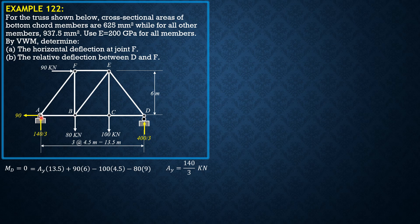At joint A, sum up forces. Assume all forces are in tension away from the joint. Summation of forces Y equals 0 gives negative 175 over 3. Summation of forces X gives force in AB equal to 125. Proceed to joint F: summation of forces X gives EF equal to negative 125. Summation of forces Y gives 140 over 3. Proceed to joint B: summation of forces Y gives BE equal to 125 over 3. Summation of forces X gives BC equal to 100.